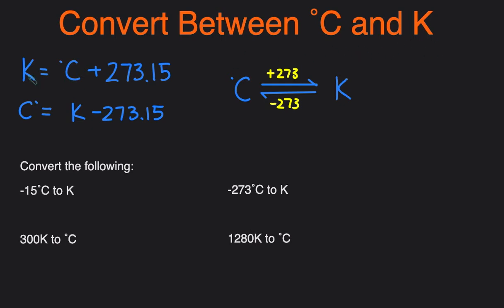The formal equation is degrees Kelvin is equal to degrees Celsius plus 273.15, but most teachers and professors will drop the 0.15 and it'll just be plus 273, so adjust accordingly depending on what you've learned in class. Degrees Celsius on the other hand is degrees Kelvin minus 273.